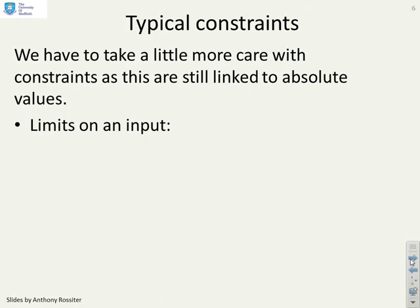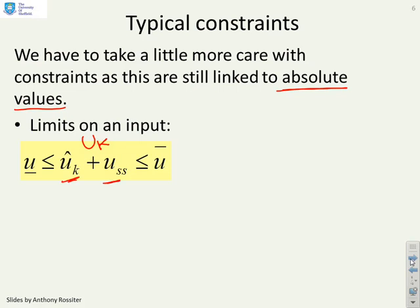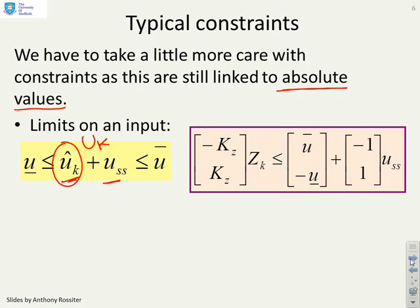What about constraints? We need to be more careful with constraints, because constraints aren't usually defined on deviation variables, they're defined on absolute values. So let's assume we've got limits on the input. I've simply replaced u_k as u_hat_k + u_ss, so that I've expressed the input limits relative to my deviation variable. This means my input constraints will take a formulation a bit like this. You'll notice my right hand side has got u_bar and -u_underbar, but it's also got these u_ss terms.